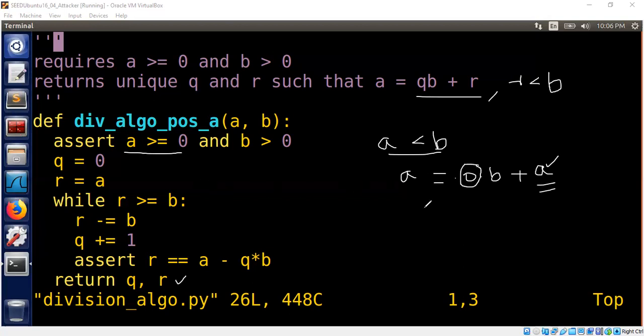Now consider the opposite of a less than b, which means a greater than or equal to b. How do we do that part? When a is greater than or equal to b, now let me draw a number line so we can see what's happening in this while loop more visually. So here is your 0, and here is your b.